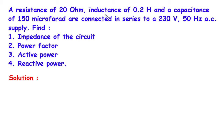A resistance of 20 Ohm, inductance of 0.2 Henry, and a capacitance of 150 microfarad are connected in series to a 230V 50Hz AC supply. Find: No.1 Impedance of the circuit, No.2 Power factor, No.3 Active power, No.4 Reactive power.